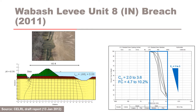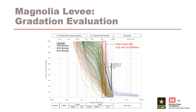A backward erosion piping failure mode initiated at Wabash Levee Unit 8 in an excavated landside ditch. At the time of failure, the White River was experiencing water levels equivalent to a 7-year flood event — the 13th highest crest on record. Two borings were drilled on either side of the breach. Gradations from the first two samples immediately below the roof-forming material showed coefficients of uniformity ranging from 2.0 to 3.6. In addition to site characterization, geomorphology, and levee performance, data preparation involves gradation data evaluation.